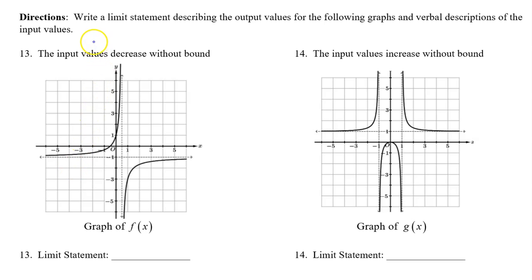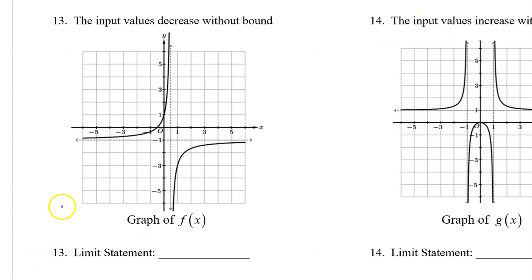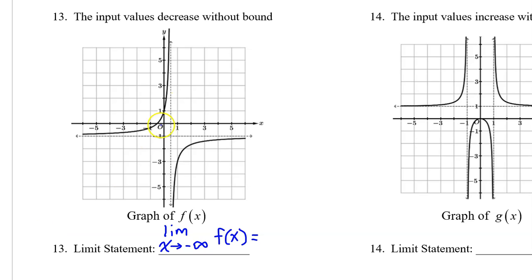For the last four problems, we will write a limit statement describing the output values for the following graphs and verbal descriptions of the input values. For number 13, we need to write a limit statement that describes what happens to the output values of f of x as the input values decrease without bound. Since the input values are decreasing without bound, we are talking about the limit as x approaches negative infinity of f of x — in other words, the left-end behavior. And f of x is approaching the horizontal asymptote of negative 1 on the left. So this limit is equal to negative 1.